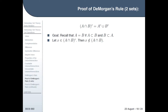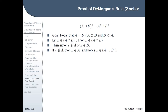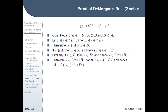Let's say that X is in (A intersect B) complement. Then by definition, X is not in A and B, so that implies either X isn't in A or X isn't in B. If X is not in A, then X is in A complement, which implies X is in A complement union B complement. Similarly, if X is not in B, then X is in B complement, hence X is in A complement union B complement. Therefore, if X is in (A intersect B) complement, it's also in A complement union B complement, so (A intersect B) complement is a subset of A complement union B complement.